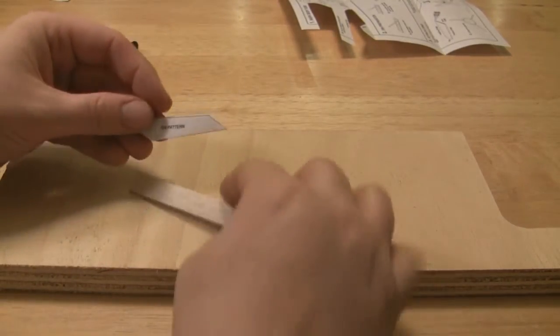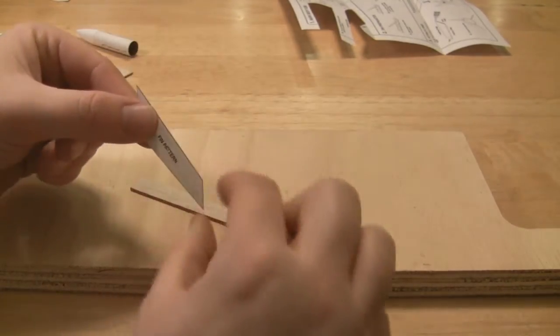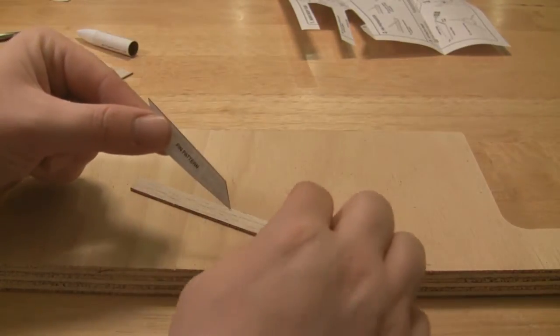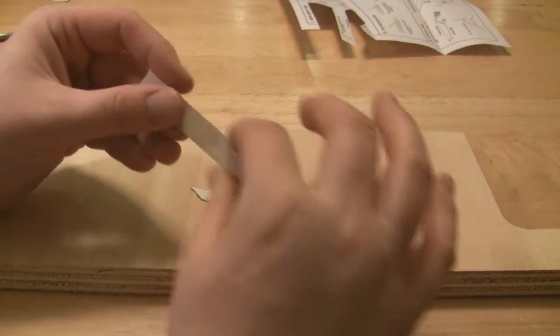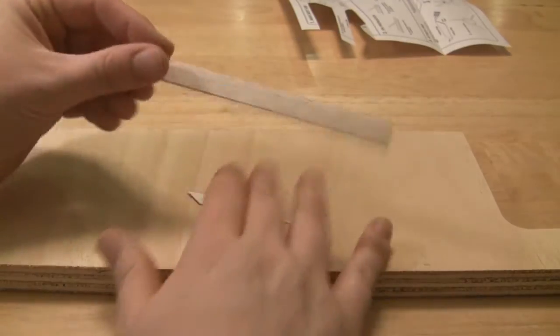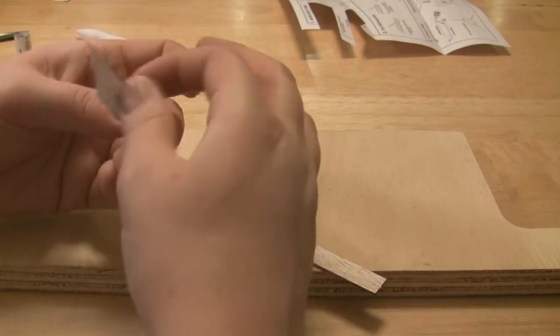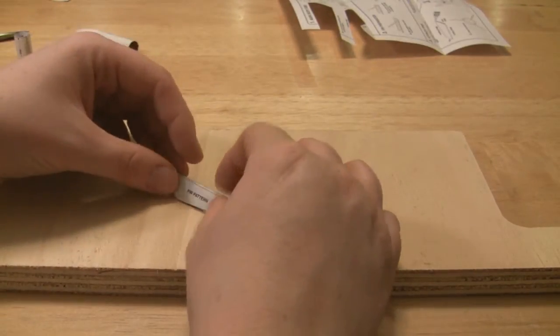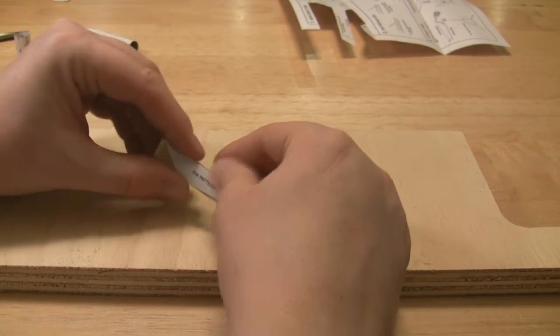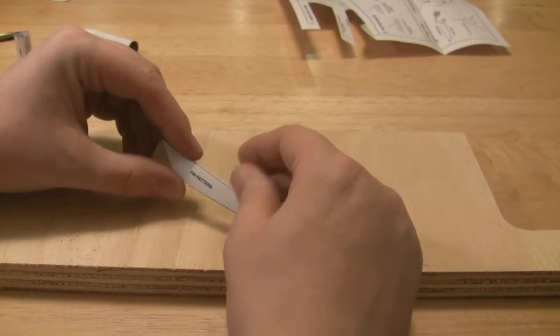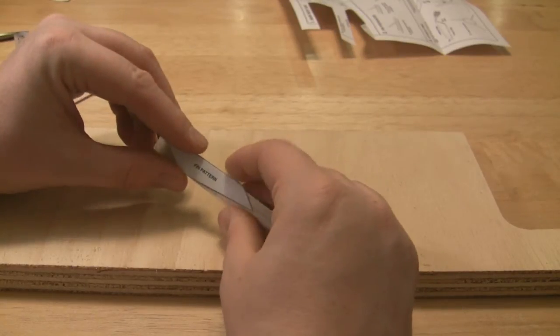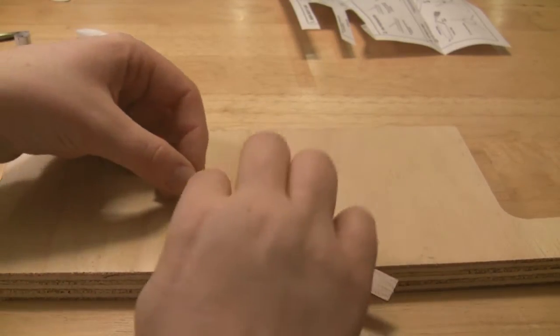Now the idea is that you want the grain going along the fin. So you want to make sure that you couldn't really do it with this piece, but let's say you had a different piece of balsa from another project, you want to make sure that you put that in the right orientation and that's just to make it strengthen it up.